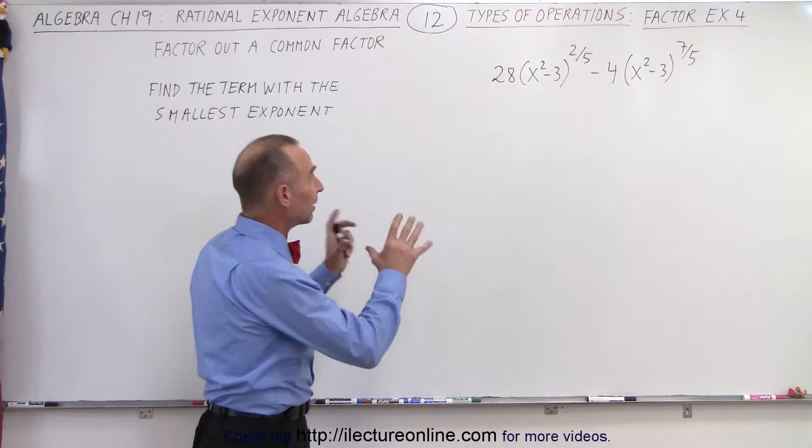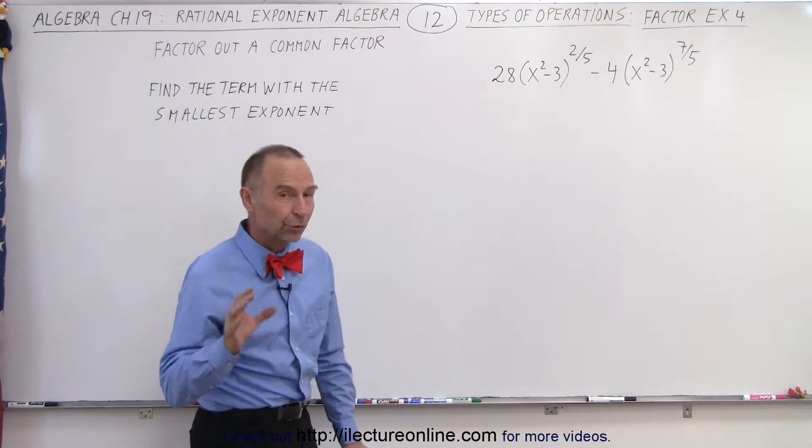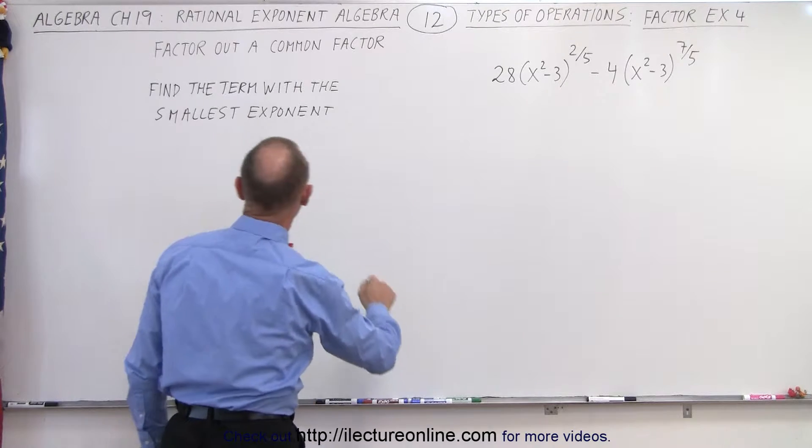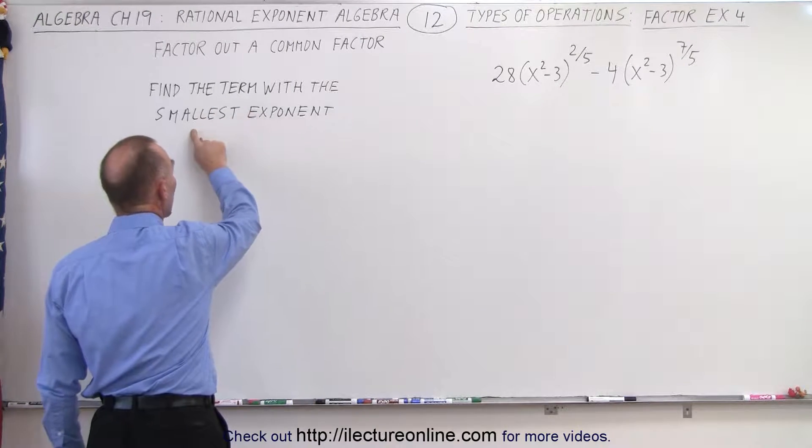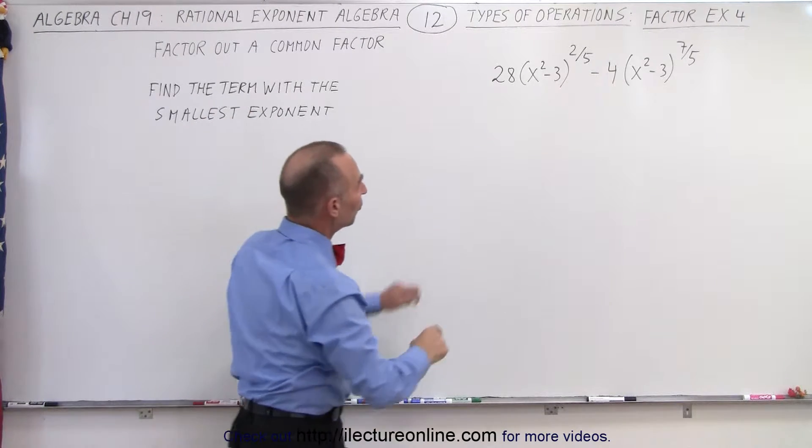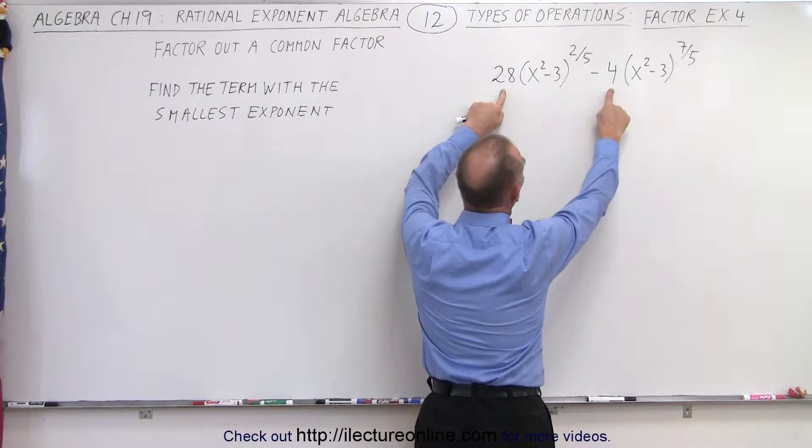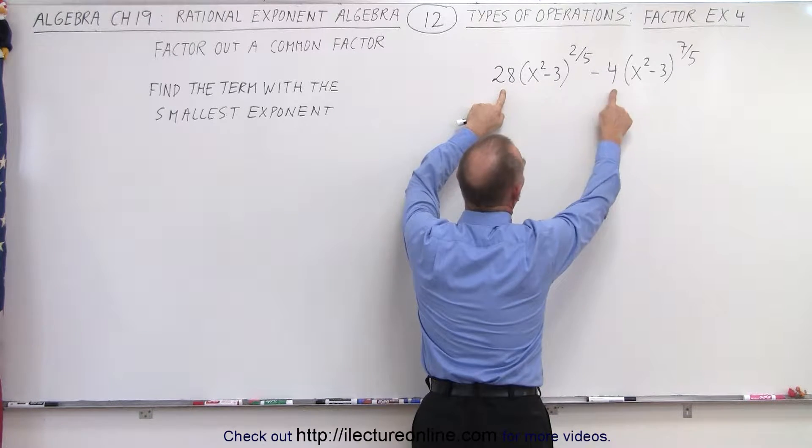We've been asked to factor a common factor. And in order to do that with something that looks like that, we're looking for the term with the smallest exponent. So first of all, between the numbers 28 and 4, of course, 4 will be the common factor between these two.